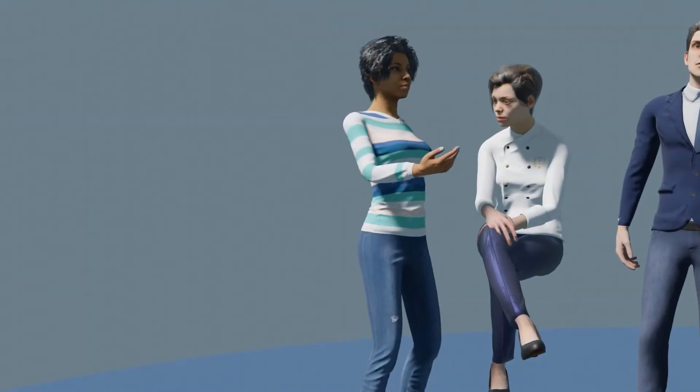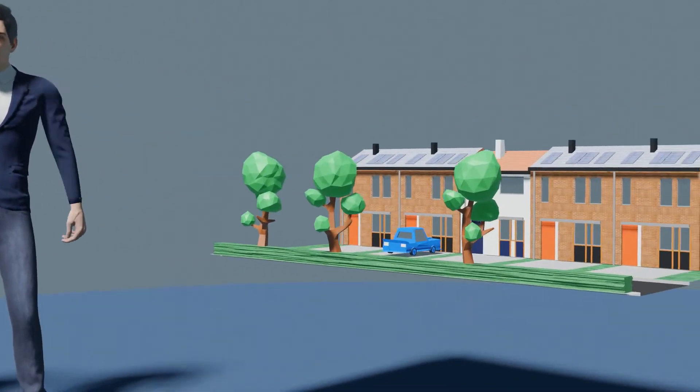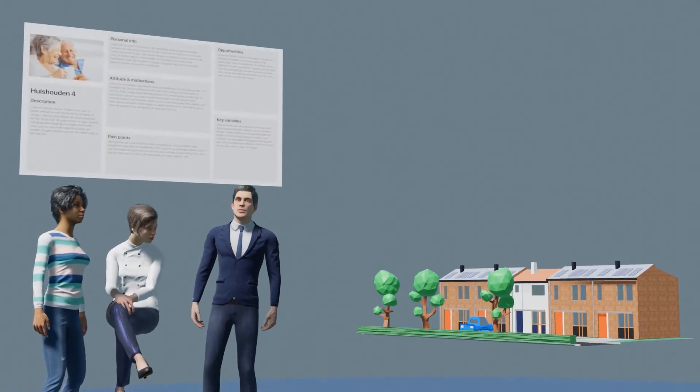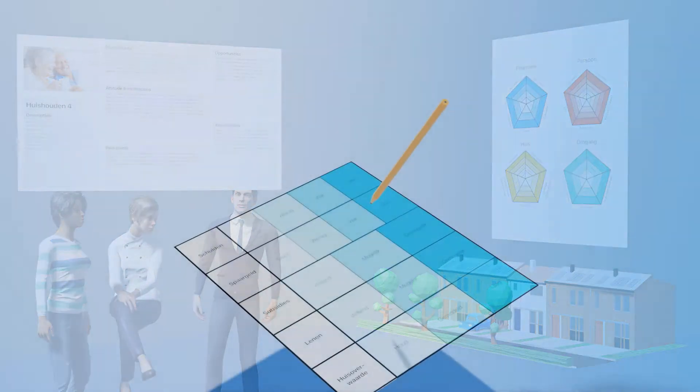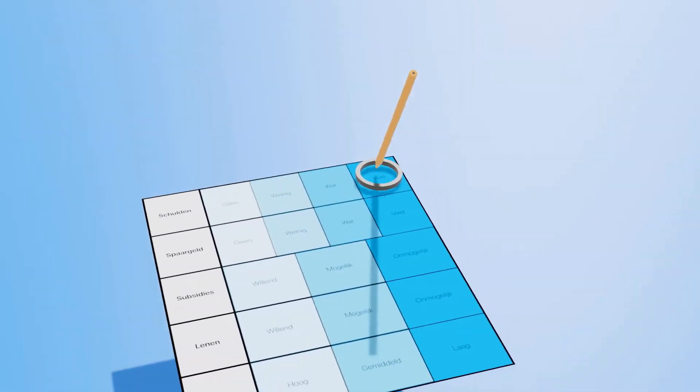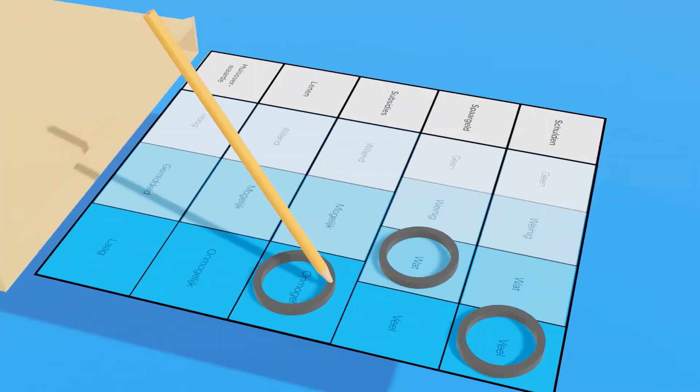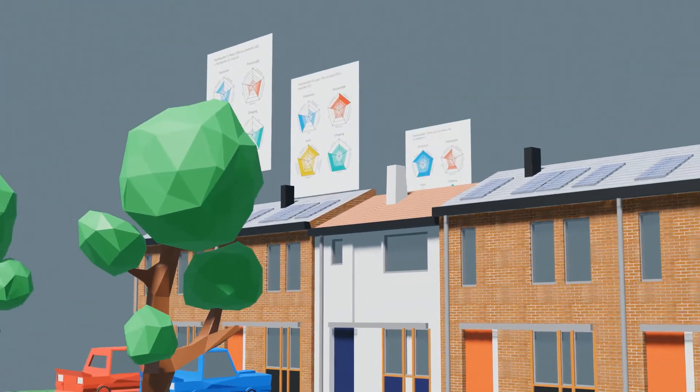To investigate how stakeholders from the system world can best gain an understanding of the living world, we compared the traditional personas to our research artifact, the huizona. Bingo cards with several household characteristics form the input for the huizona. The output is a set of spiderweb diagrams that show the likelihood of a household being able to join the renovation.